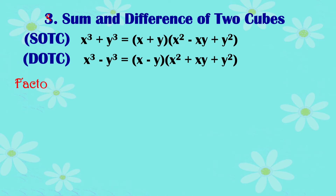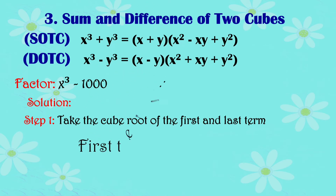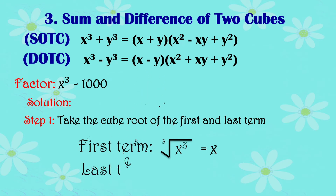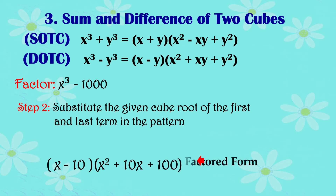Now let's factor x cubed minus 1000. The operation is minus, so we use the DOTC pattern. With DOTC, all signs in the trinomial are positive. Take the cube root of the first and last terms the same way, then substitute into the pattern: x minus 10 times the quantity x squared plus 10x plus 100. That is the factored form.